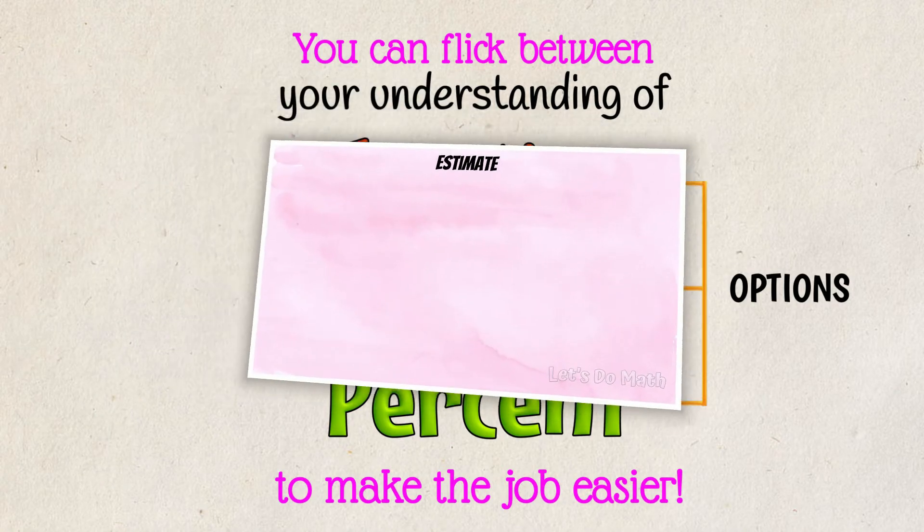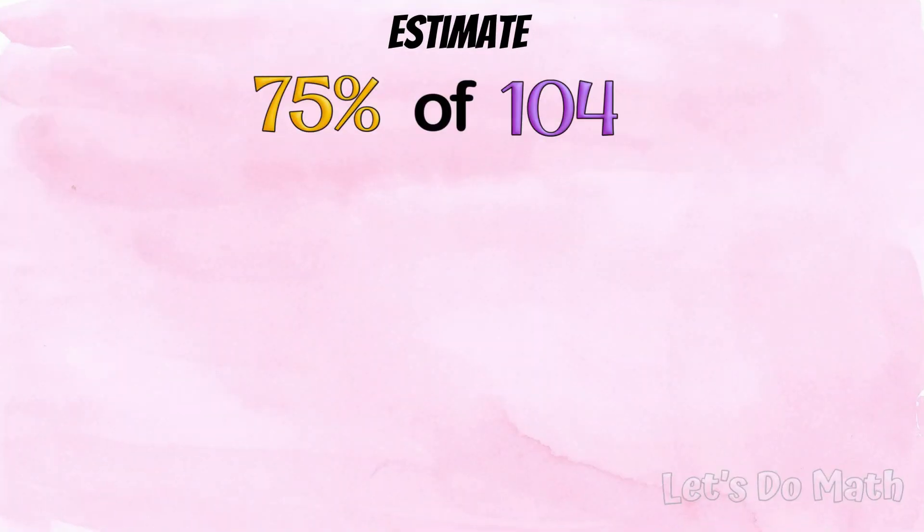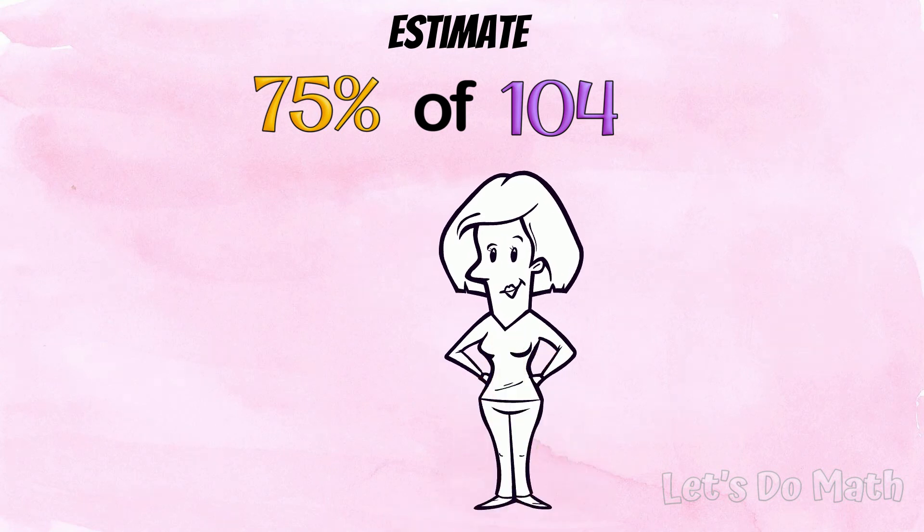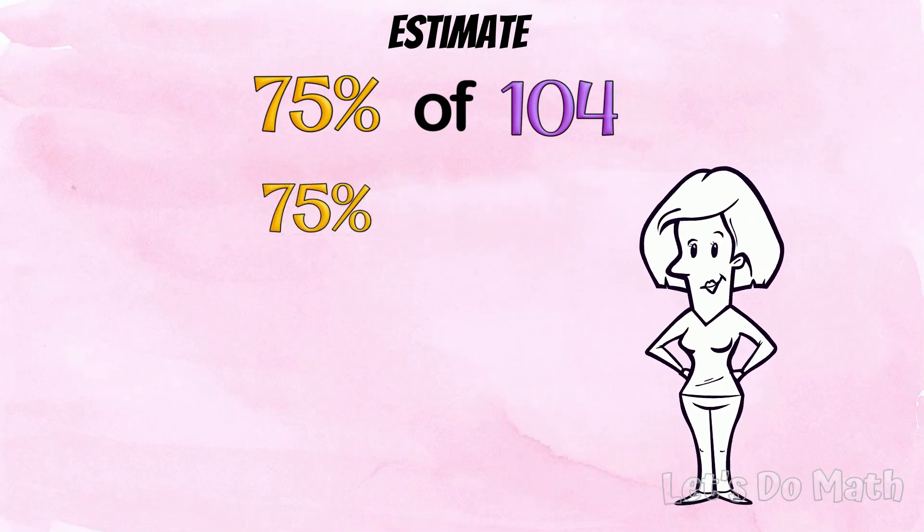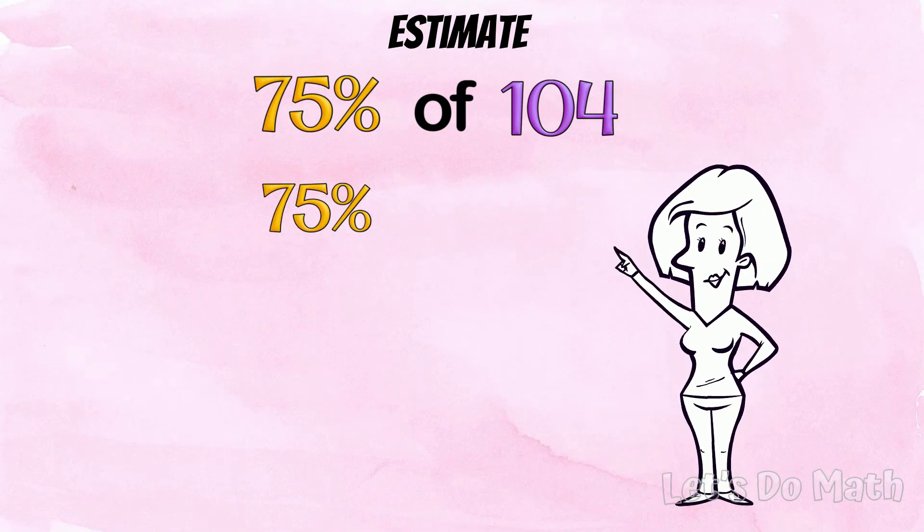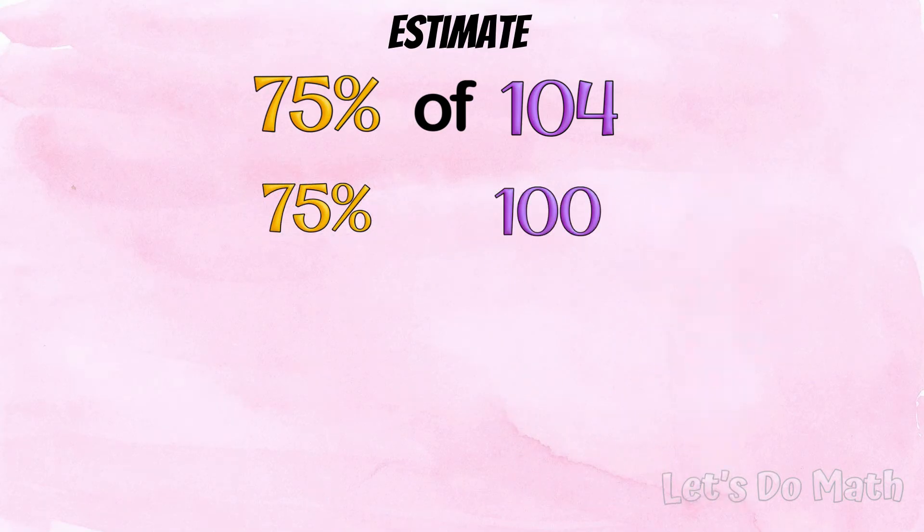Now we've got 75% of 104. I like 75% because it's the 3 quarter benchmark. 104 is going to change. It rounds down to 100. And of course, 75% of 100 is 75.